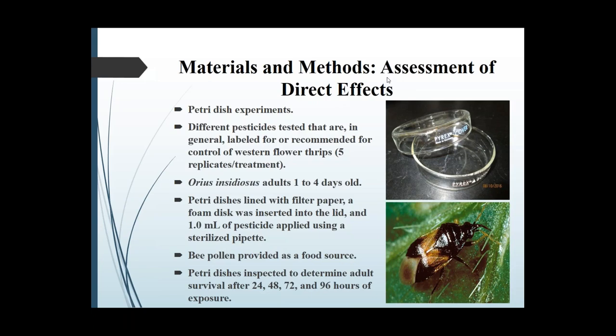Here's a brief overview of materials and methods — these are worst-case scenarios, so if they survive the trial, they'll survive in the greenhouse. We use petri dishes, testing various pesticides on Orius insidiosus adults aged one to four days old. The petri dishes are lined with filter paper, a one-mL aliquot of pesticide is applied and distributed, bee pollen is provided as a food source, and we evaluate survival after 24, 48, 72, and 96 hours.